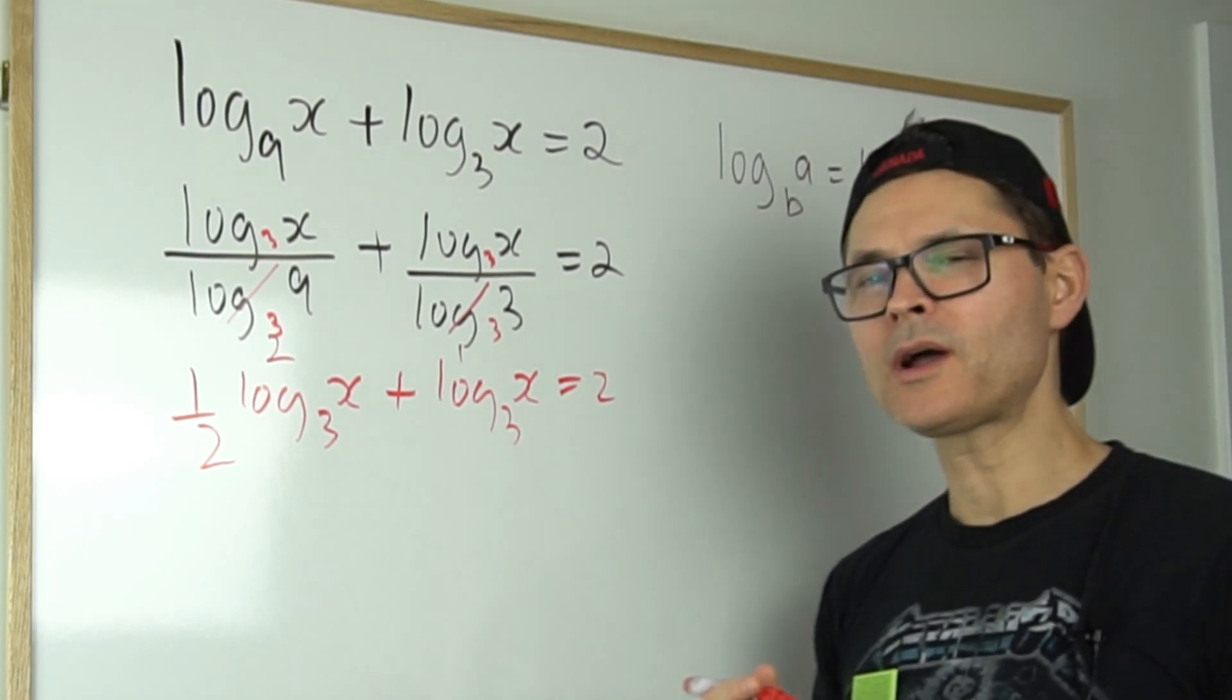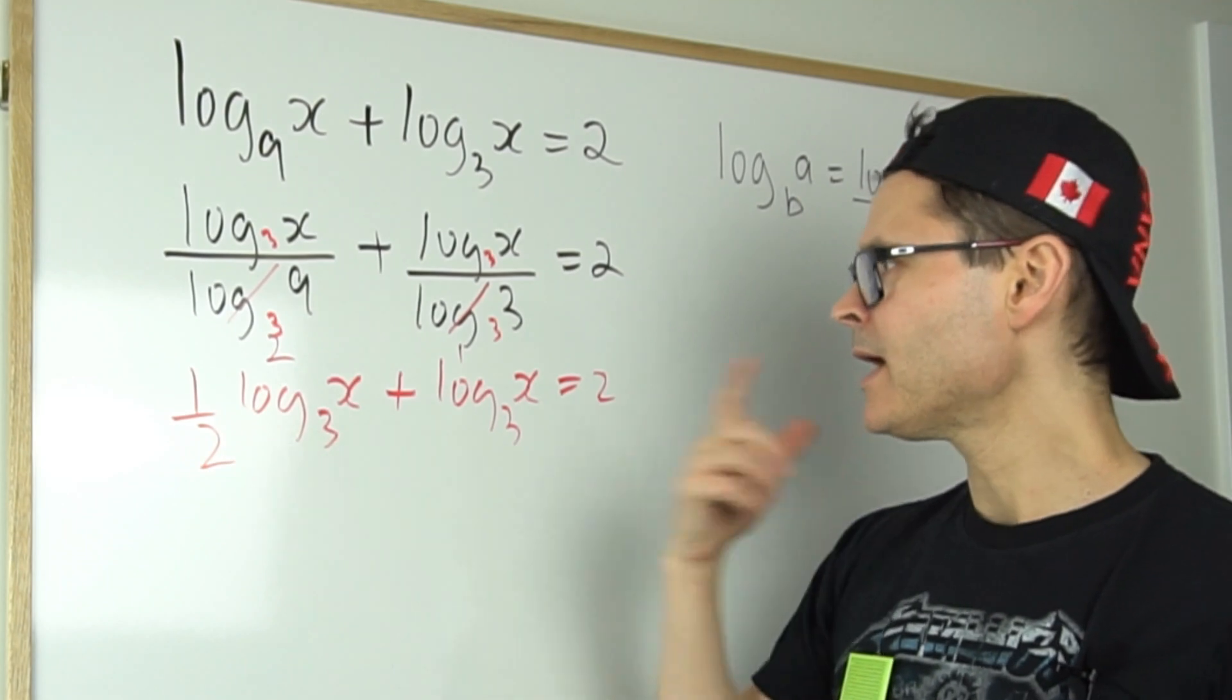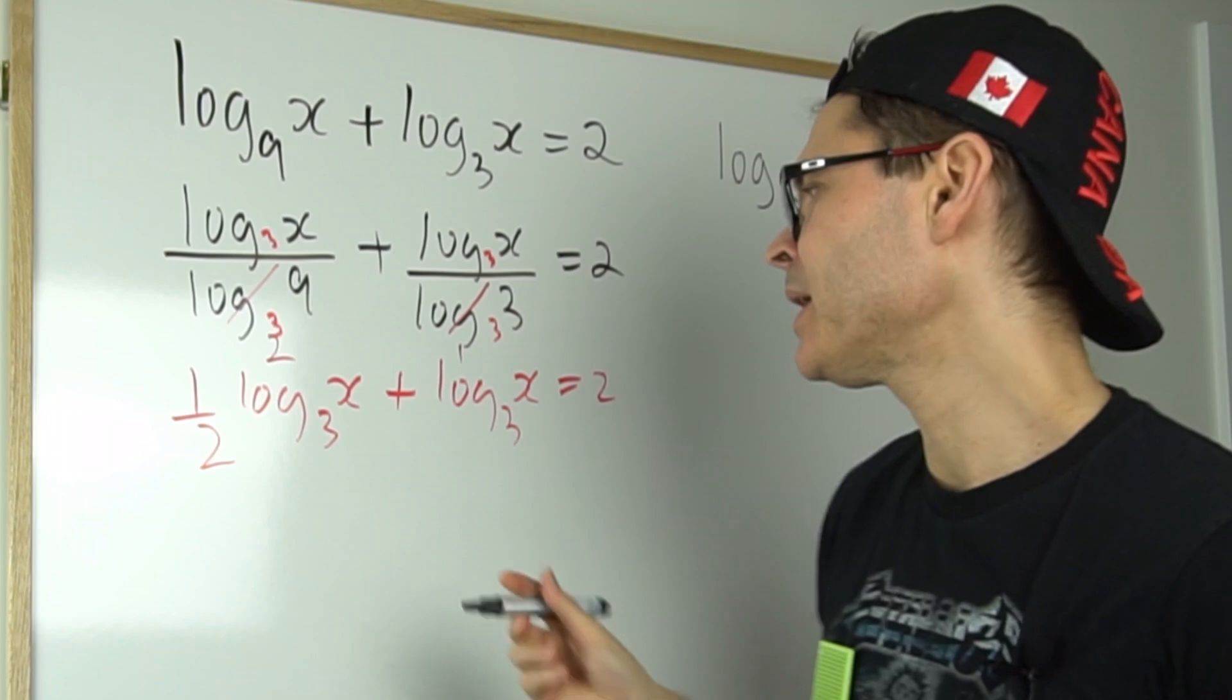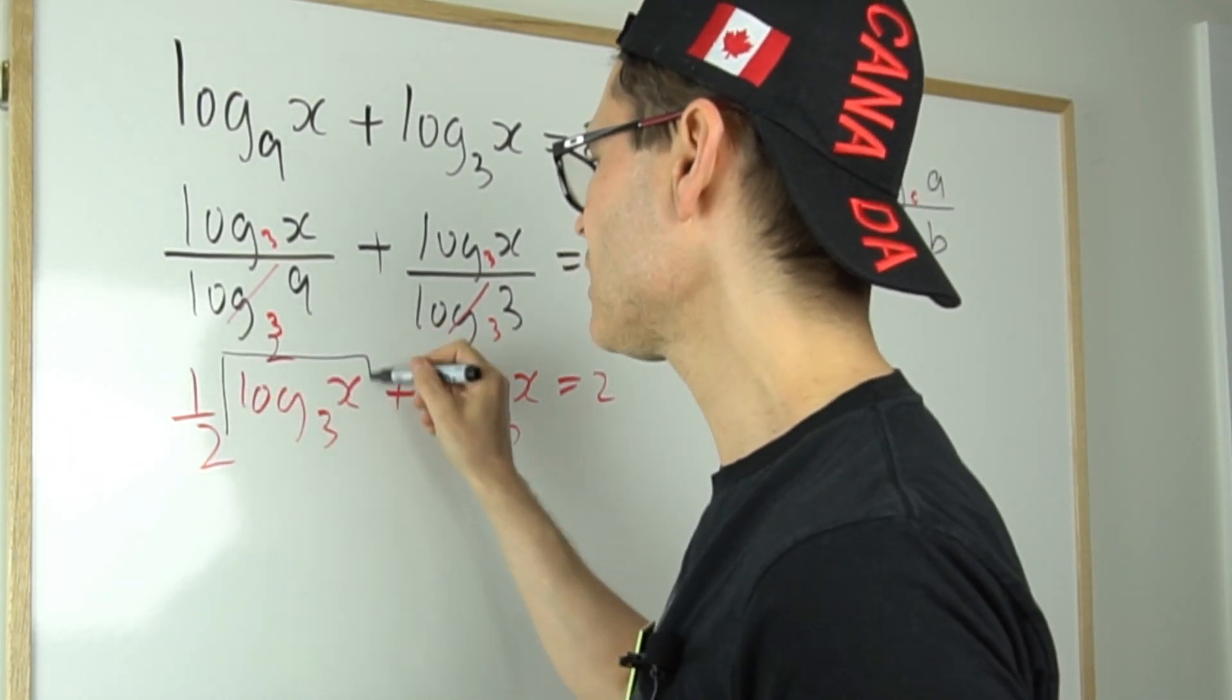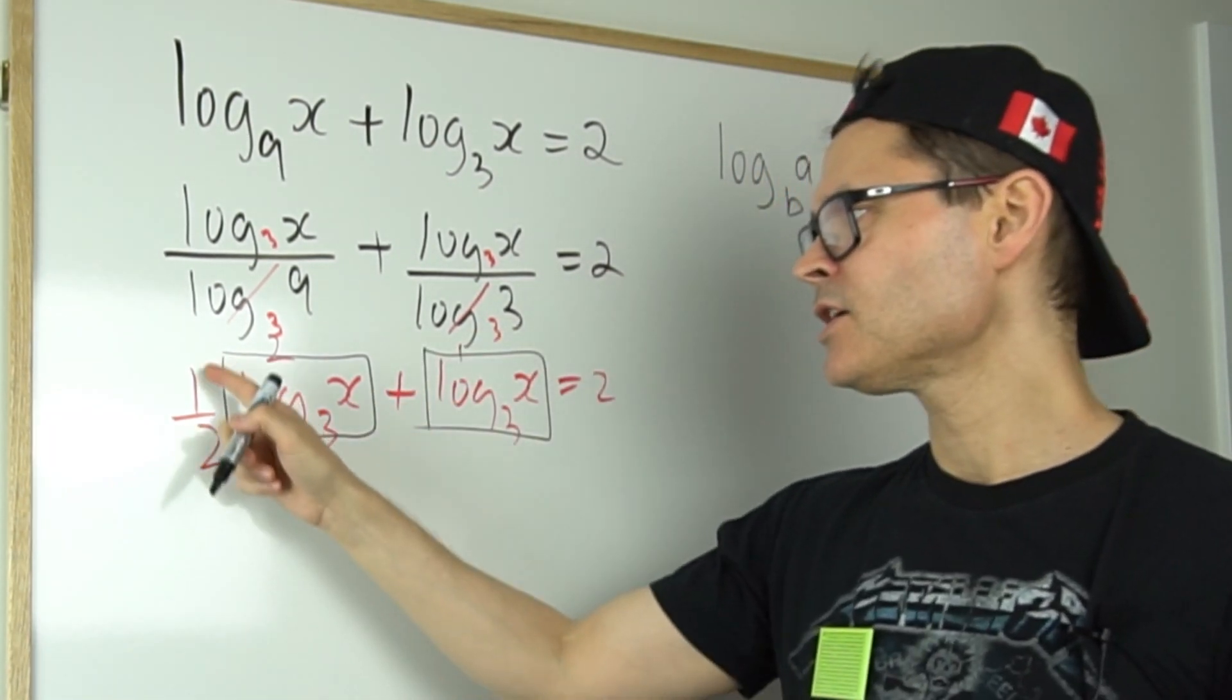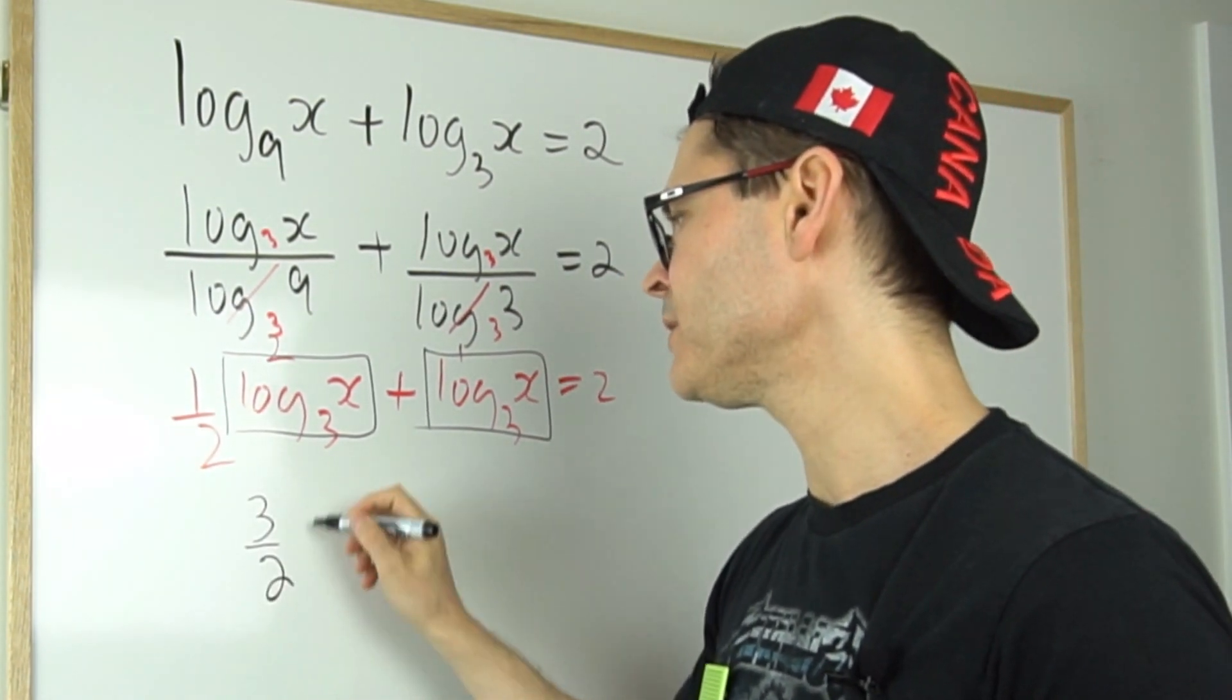And I mean I can go a couple of directions from here. What I could do is choose to multiply through by two, but what I'm going to do is, because these are like terms, for instance just look at the log of x base three. The log of x base three, here I have a half of one, here I have one, so in total I've got three over two of them.